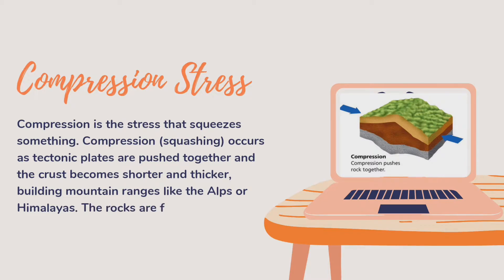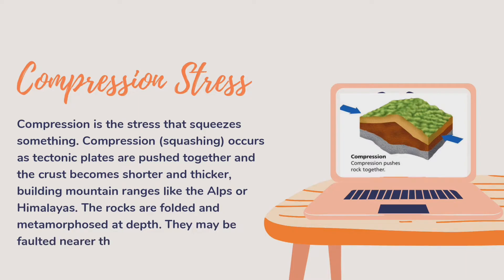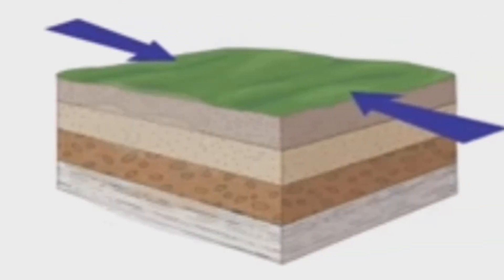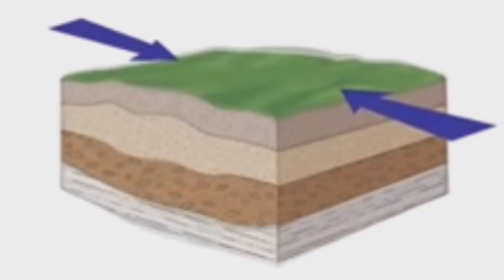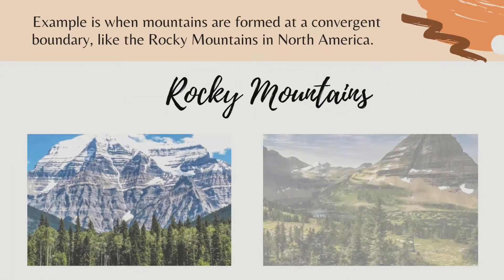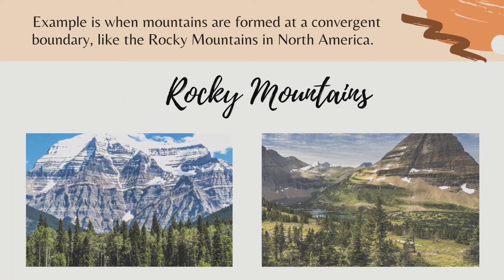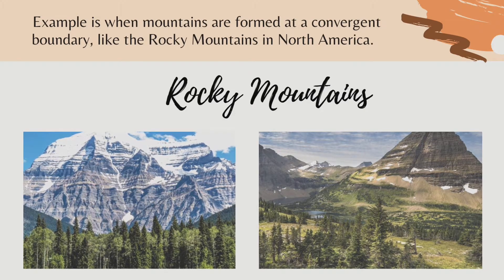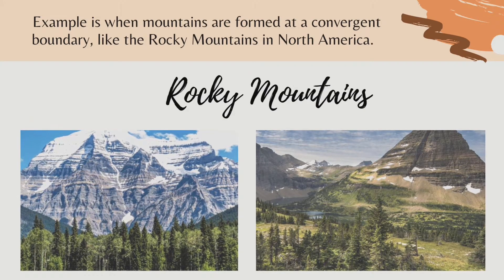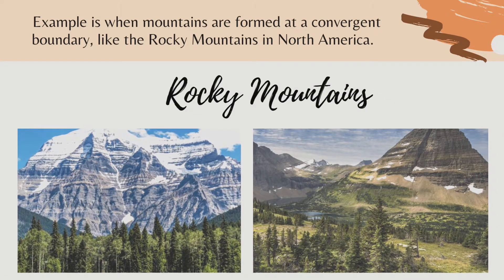The rocks are folded and metamorphosed at depth. They may also be folded nearer the surface. An example is when mountains are formed at a convergent boundary, like the Rocky Mountains in North America.